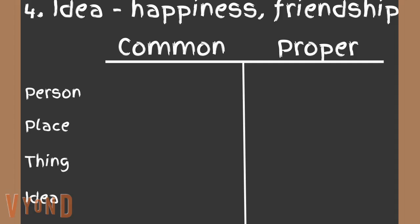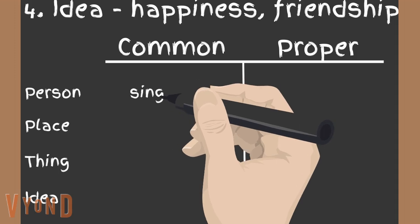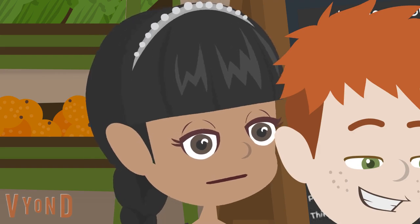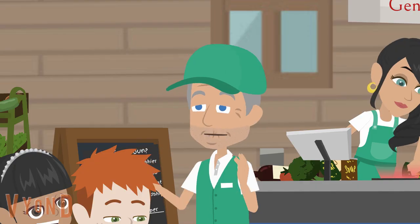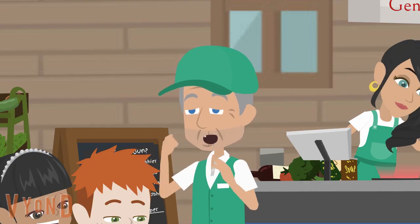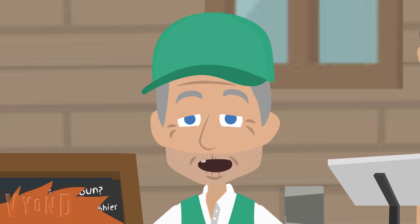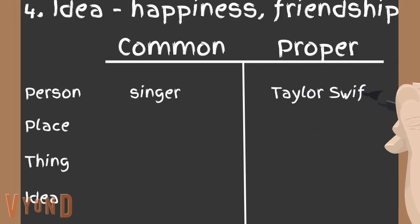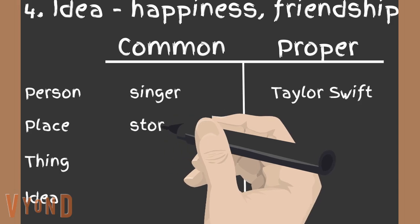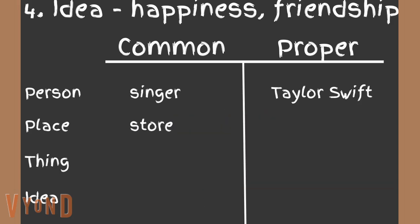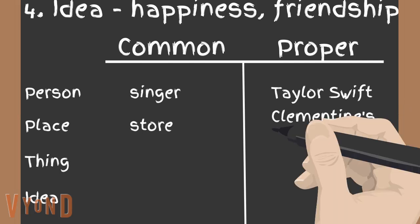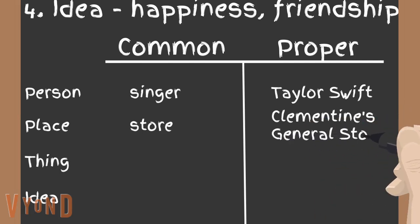So for person, the common noun could be singer, and the proper noun could be Taylor Swift. I love her music — the lyrics are so relatable. Anywho, for place, we can say store under common and Clementine's General Store for proper.